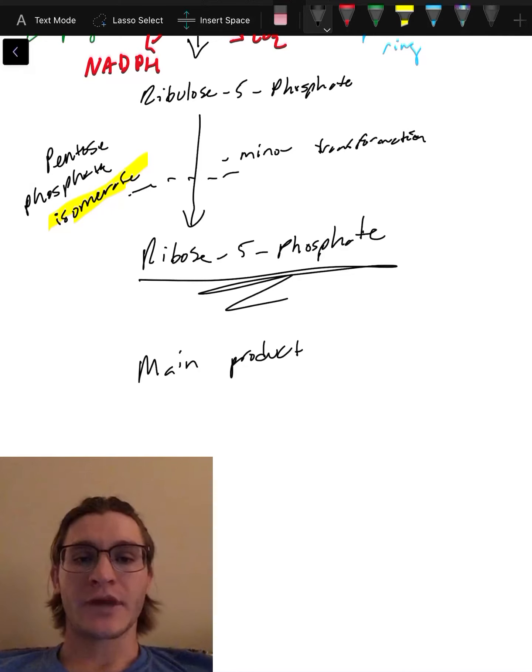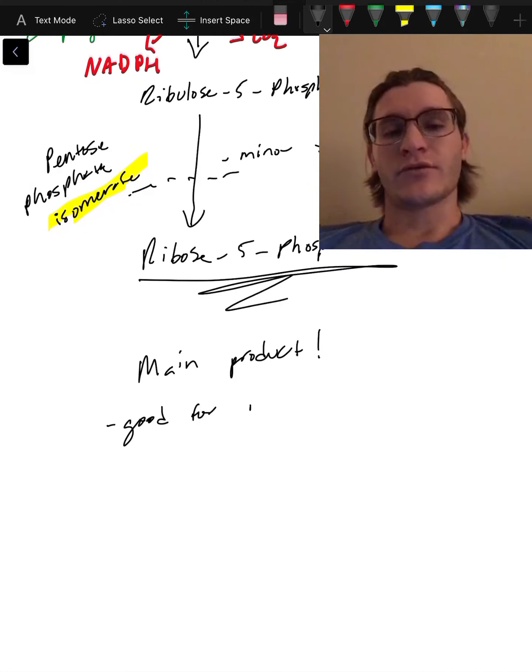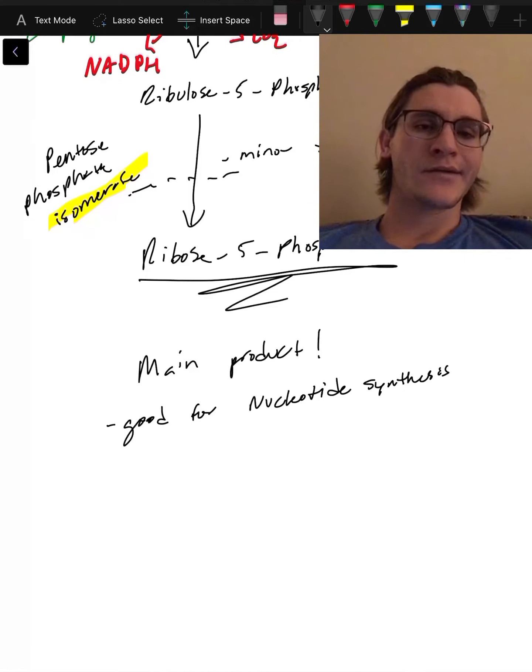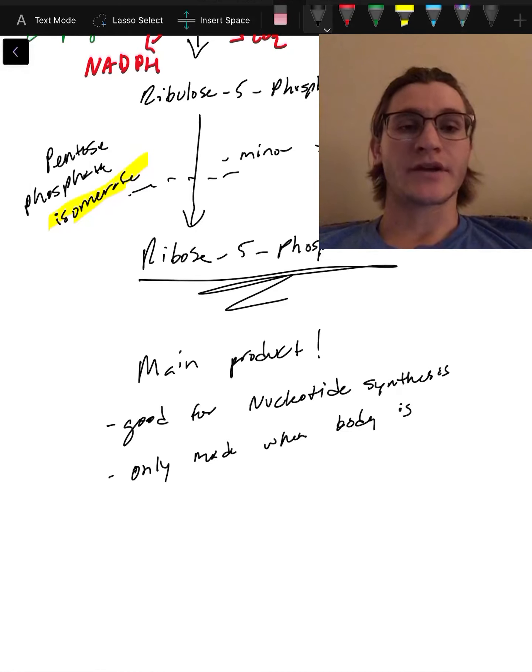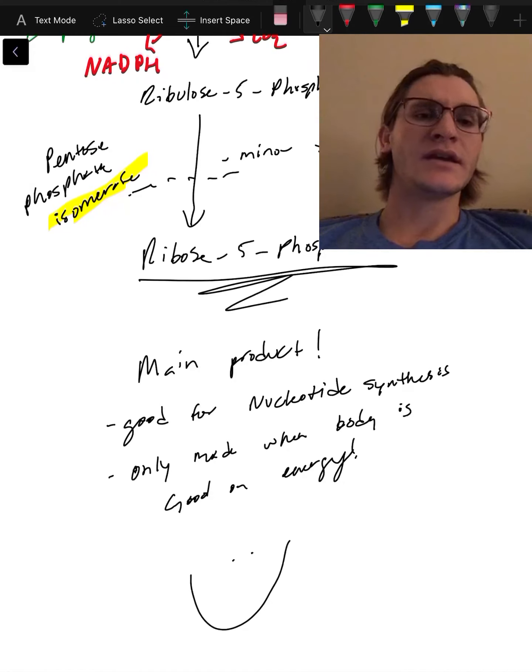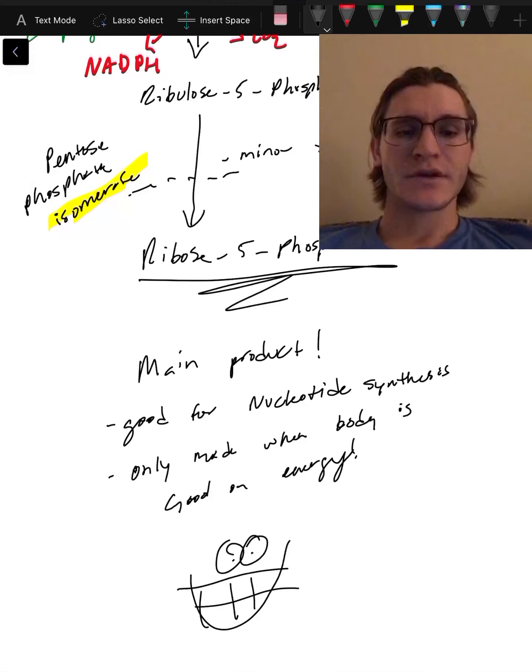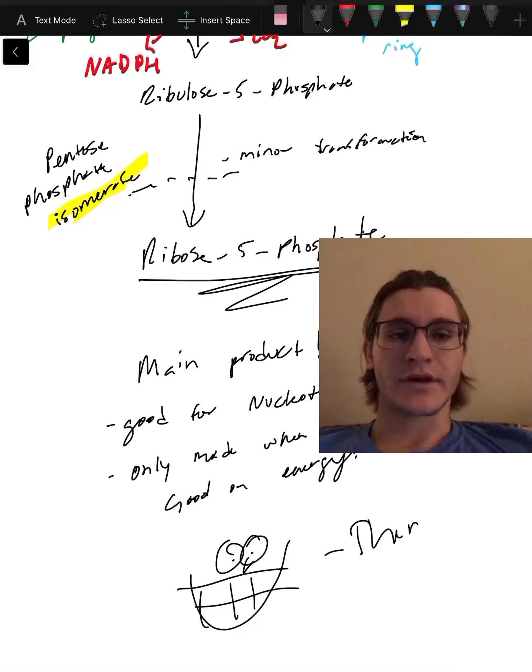That is the pentose phosphate shunt. Our main product, ribose 5-phosphate, as I mentioned earlier, is gonna be good for synthesis of nucleotides. It can only really occur when our body is doing really good on energy, as it's a shunt for glycolysis. So if our body's in demand for energy, we're not going to be making ribose 5-phosphate. NADPH is only really used in preparations for the future. Thank you guys for tuning in. My name is Adam the Science Teacher, and I'll catch you guys next time.